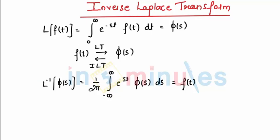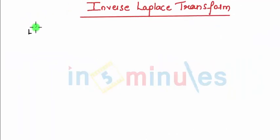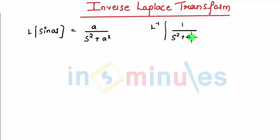As we know, Laplace transform formulas are given by Laplace of sin(at) is a upon s square plus a square. So we can say L inverse of 1 divided by s square plus a square is equal to 1 upon a sin(at).